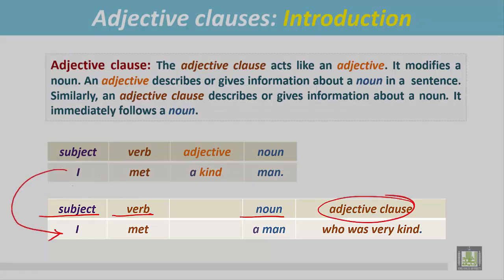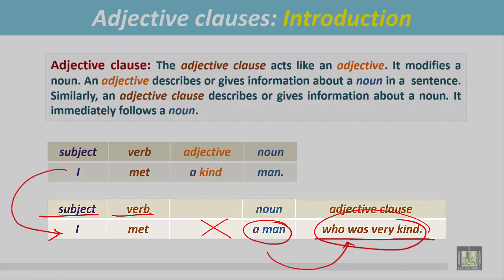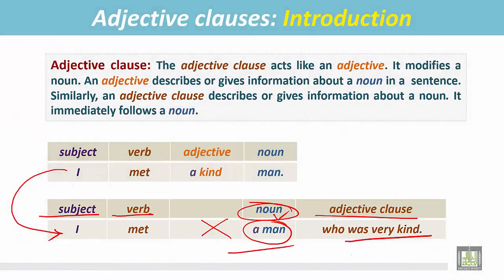The same sentence has been written in a different way. I met a man. There is nothing before this noun, but there is something after this noun: who was very kind. And this part is the adjective clause because it is giving information about this noun or modifying this noun. How was the man? He was very kind. So from this sentence, we understand that the adjective clause describes or gives information or modifies the noun just before it. The noun is immediately followed by the adjective clause.